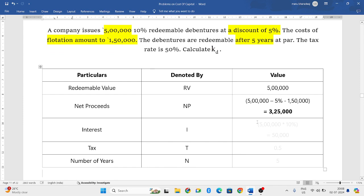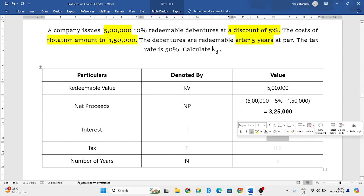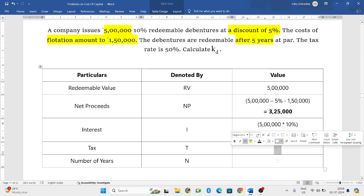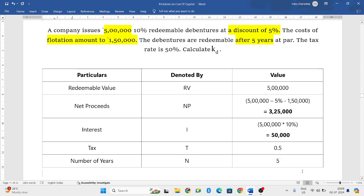Now, we need to find out the interest. By this time you should be knowing that interest will always be calculated on the actual value. The actual value of debentures is Rs 5,00,000. Interest rate is 10%. You get the interest that is Rs 50,000. Tax, they have told that it is 50%. So, convert it into decimals. It becomes 0.5. And for how many years are the debentures issued? It is issued for 5 years. So, number of years will become 5.